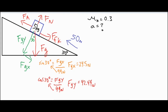What we did is use the sine of 30 degrees, which is the opposite over the hypotenuse. Our hypotenuse is fg, which equals mg — five kilograms times 9.8 — that's where the 49 newtons came from. We found fgx by cross multiplying, getting 24.5 newtons. Similarly, we used the cosine of 30 degrees to find the adjacent side, giving us the perpendicular component fgy of 42.44 newtons.